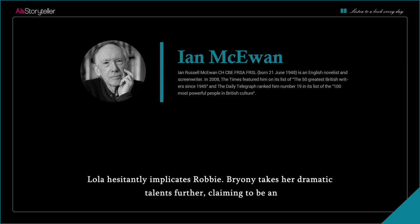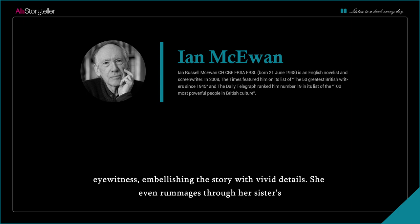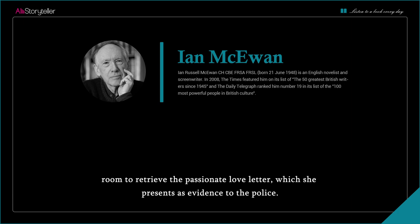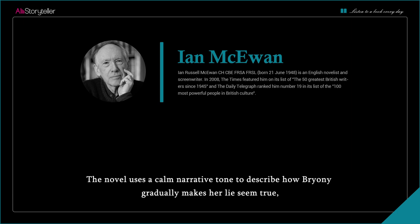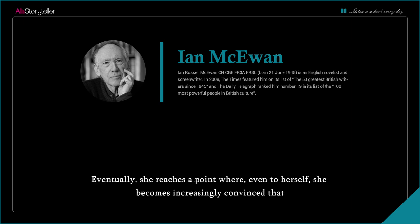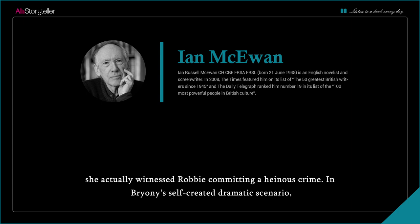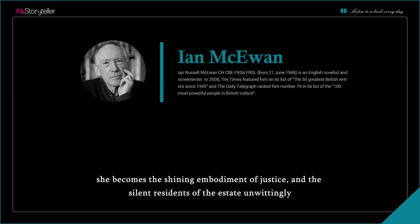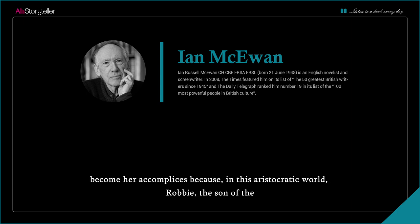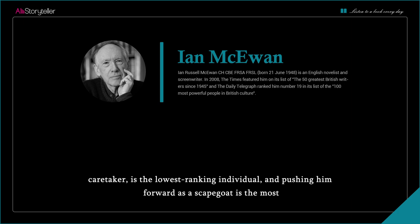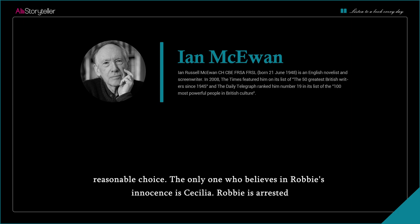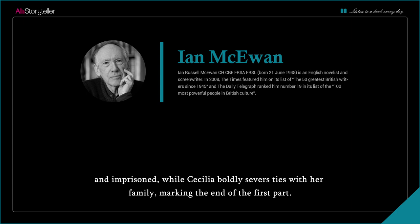Bryony takes her dramatic talents further, claiming to be an eyewitness and embellishing the story with vivid details. She even rummages through her sister's room to retrieve the passionate love letter, which she presents as evidence to the police. The novel uses a calm narrative tone to describe how Bryony gradually makes her lie seem true, starting from subtle suggestions and escalating to outrageous claims. Eventually, even to herself, she becomes increasingly convinced that she actually witnessed Robbie committing a heinous crime. In Bryony's self-created dramatic scenario, she becomes the shining embodiment of justice, and the silent residents of the estate become her accomplices — in this aristocratic world, Robbie, the son of the caretaker, is the lowest-ranking individual, making him the most reasonable scapegoat. The only one who believes in Robbie's innocence is Cecilia. Robbie is arrested and imprisoned, while Cecilia boldly severs ties with her family, marking the end of the first part.